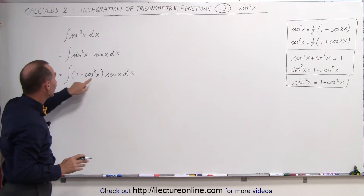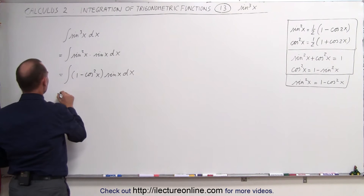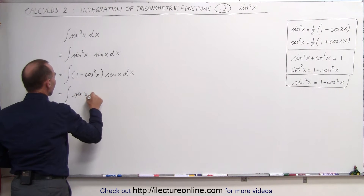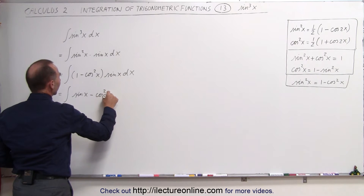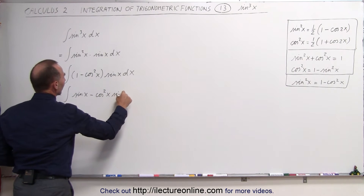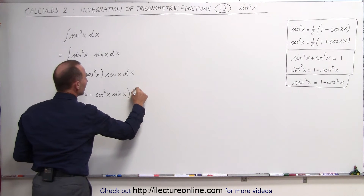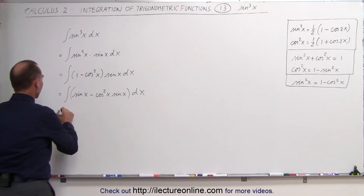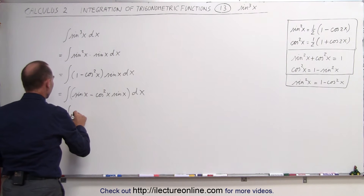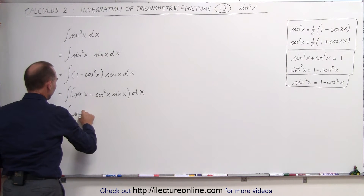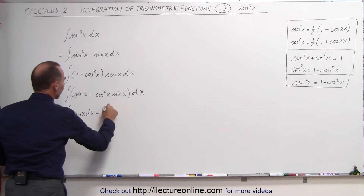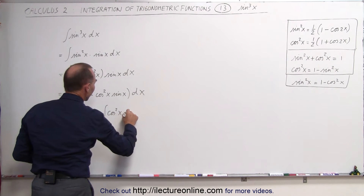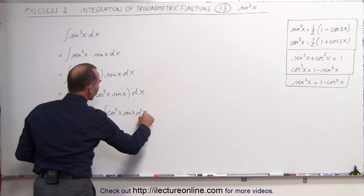Now we multiply sine of x through the two terms, giving us the integral of sine of x minus cosine squared of x times sine of x, all times dx. We now have two separate integrals, which we can write as the integral of sine of x dx minus the integral of cosine squared of x times sine of x dx.